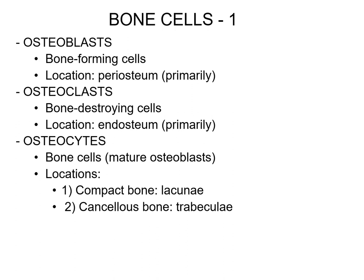Next, we're going to reintroduce those bone cells. We talked about osteocytes and blasts in chapter four, and now we'll go into a little more detail. Osteoblasts — B for blast, B for build — we are building tissue. Osteoclasts do the exact opposite — C for chew, crush, or collapse. Osteocytes are those mature osteoblasts that get trapped as they get older and just kind of hang out in the bone tissue. They do still have a job, but they're just not as active as osteoblasts and osteoclasts.